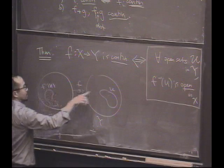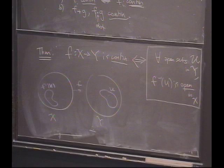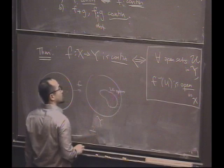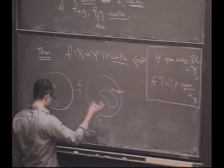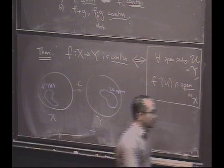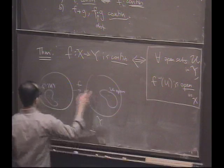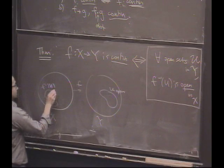That is the set of all points that get mapped into U. The claim is if this is open, for every open set here, its inverse image will also be open. That's the claim. If f is continuous. And if this is true for every open set, that means f is continuous.